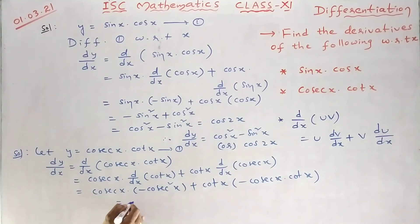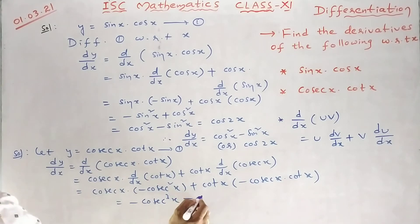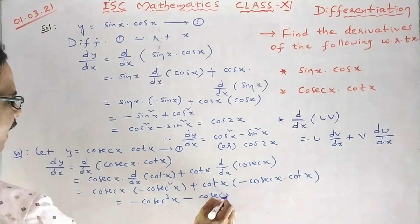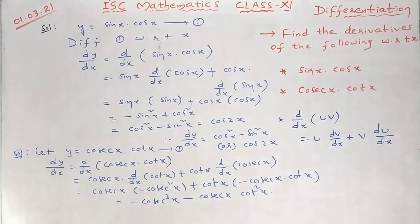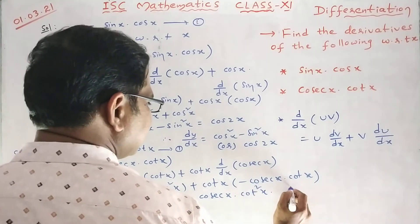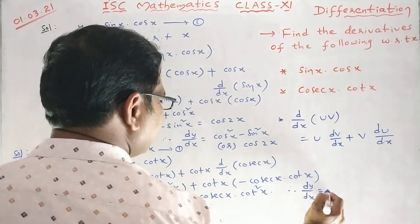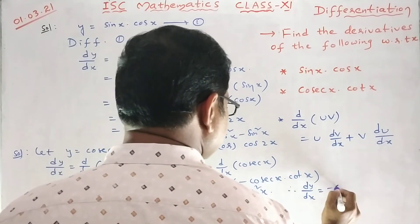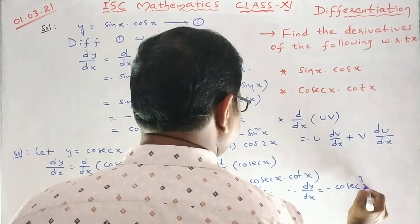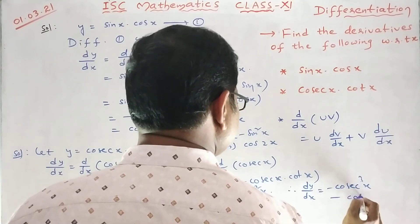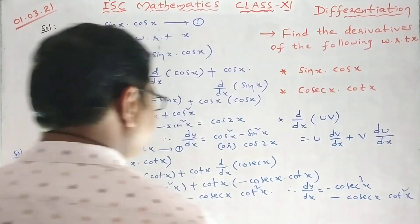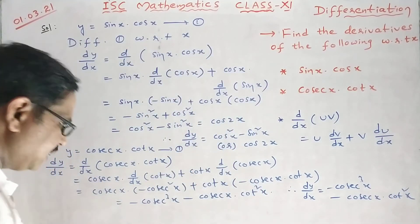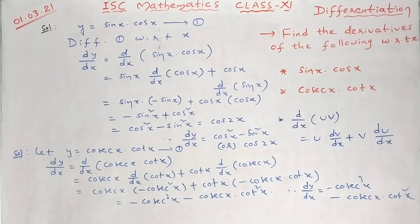This gives minus cosec cubed x minus cosec x into cot squared x. We cannot simplify this further. So dy/dx equals minus cosec cubed x minus cosec x into cot squared x. That is the final answer. Hope it is clear. Thank you.